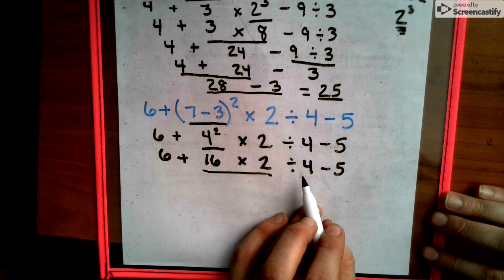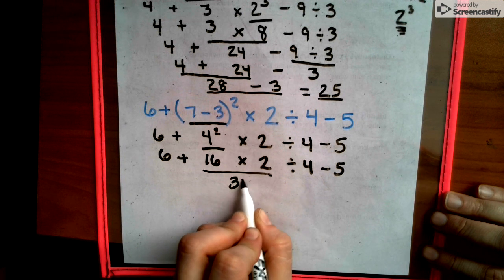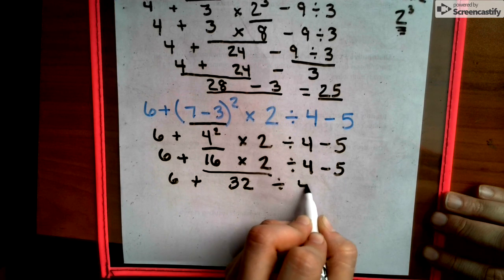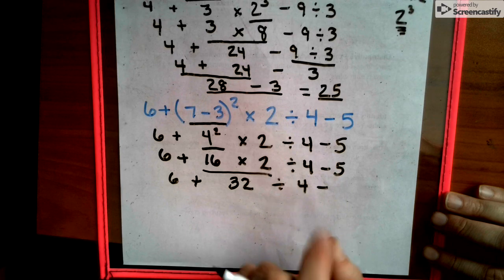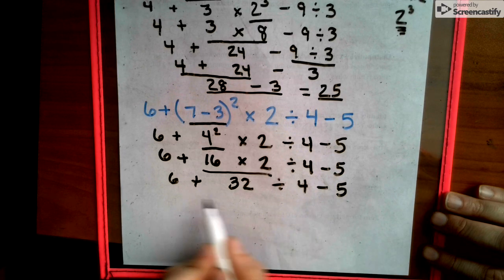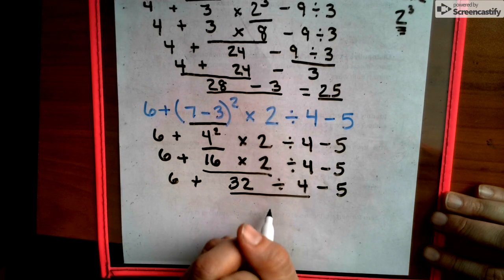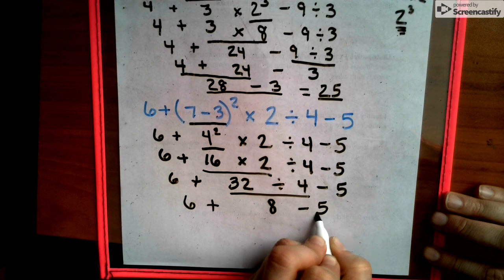We underline our next step, which is multiplication or division, whichever is closest to our left. And our left is multiplication. We write that down. We bring down everything else that we did not use. And then we look and we say, is there any more multiplication or division? There is. So we get our answer here of 8. We bring down everything else we did not use.